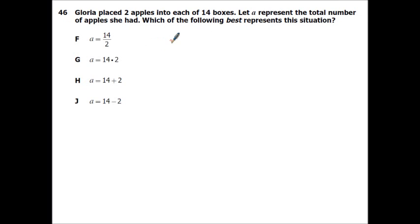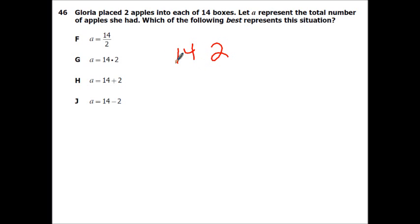Gloria placed 2 apples into each of 14 boxes. Let A represent the total number of apples. She has 14 boxes with 2 apples in each, so to find A we multiply those two together. The answer is G.